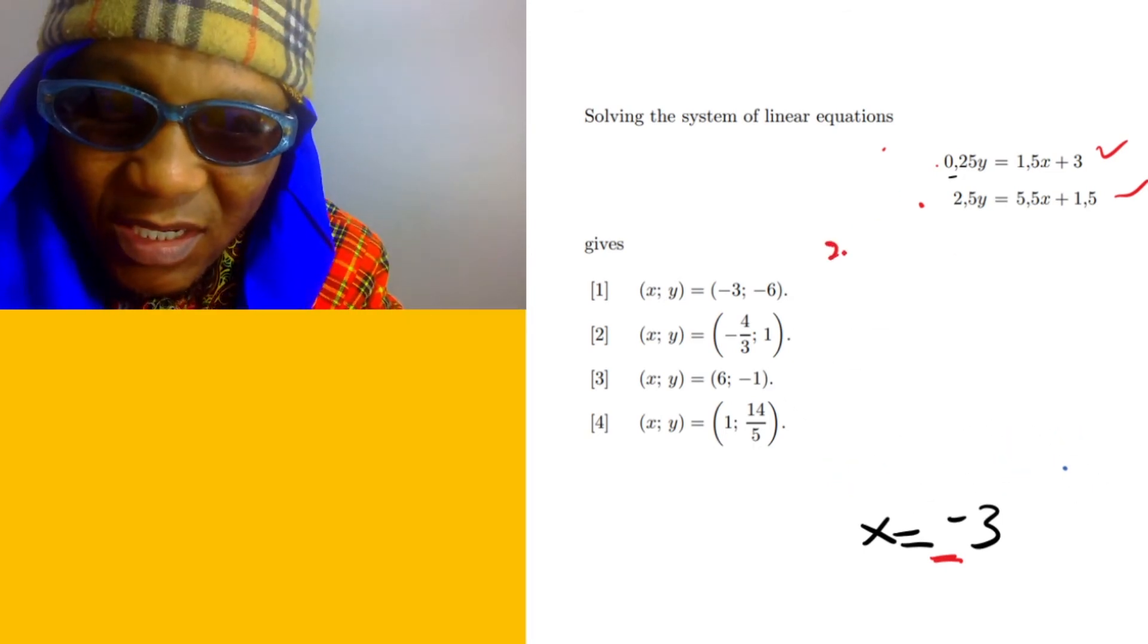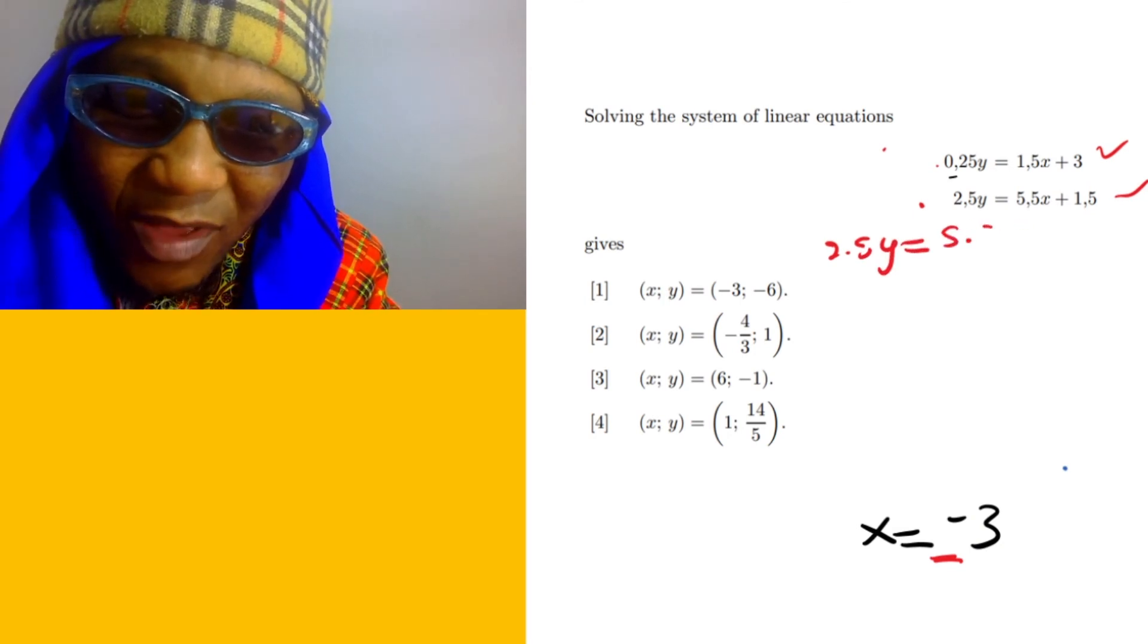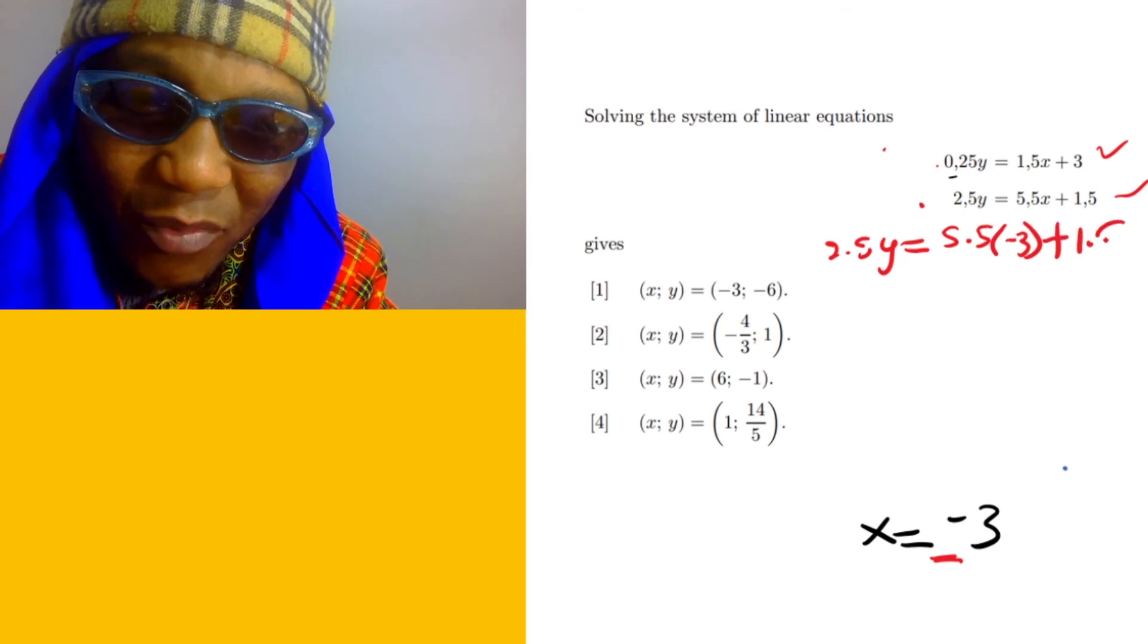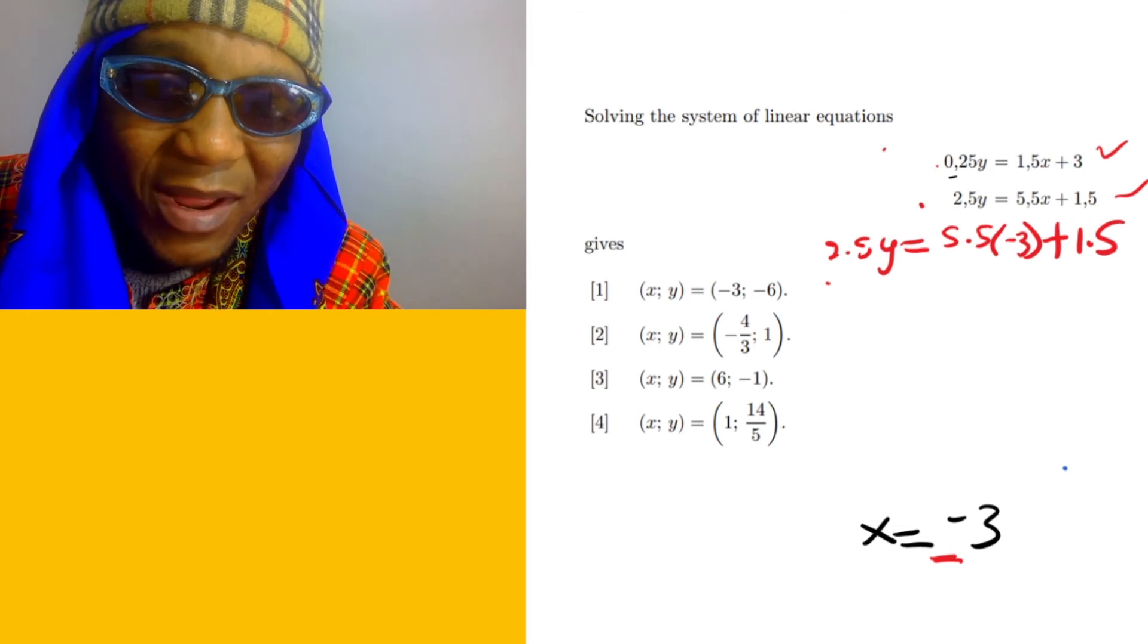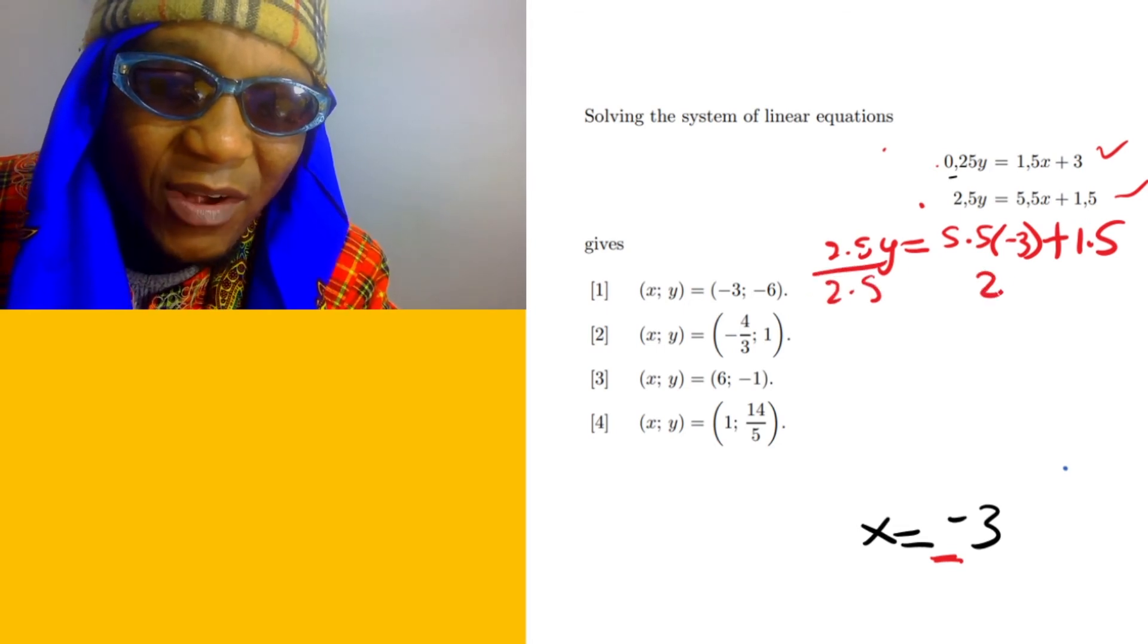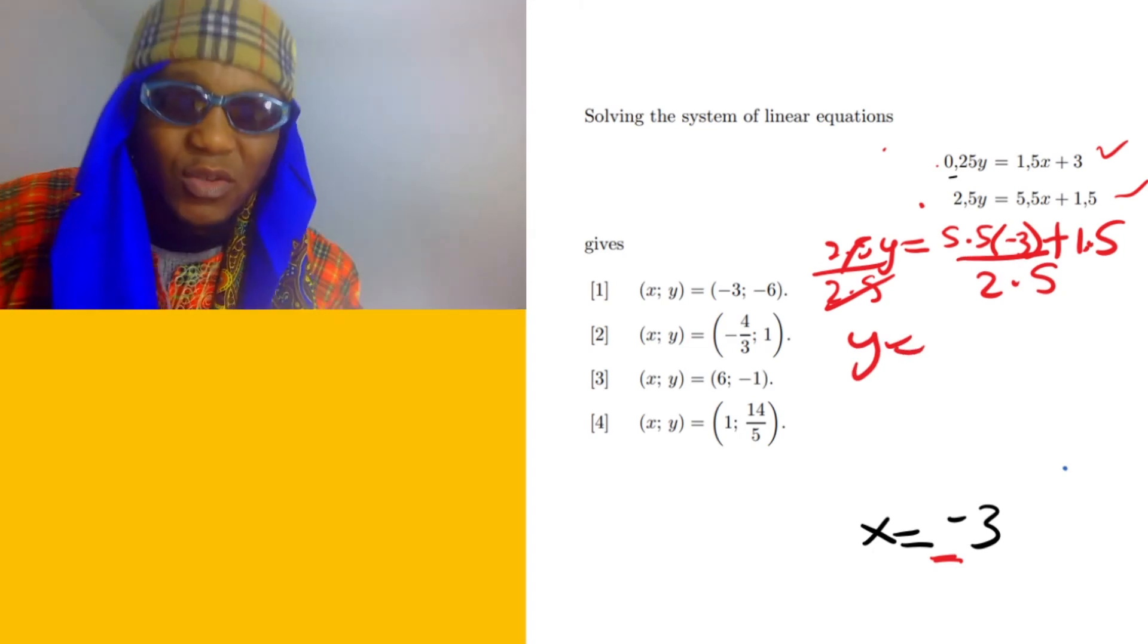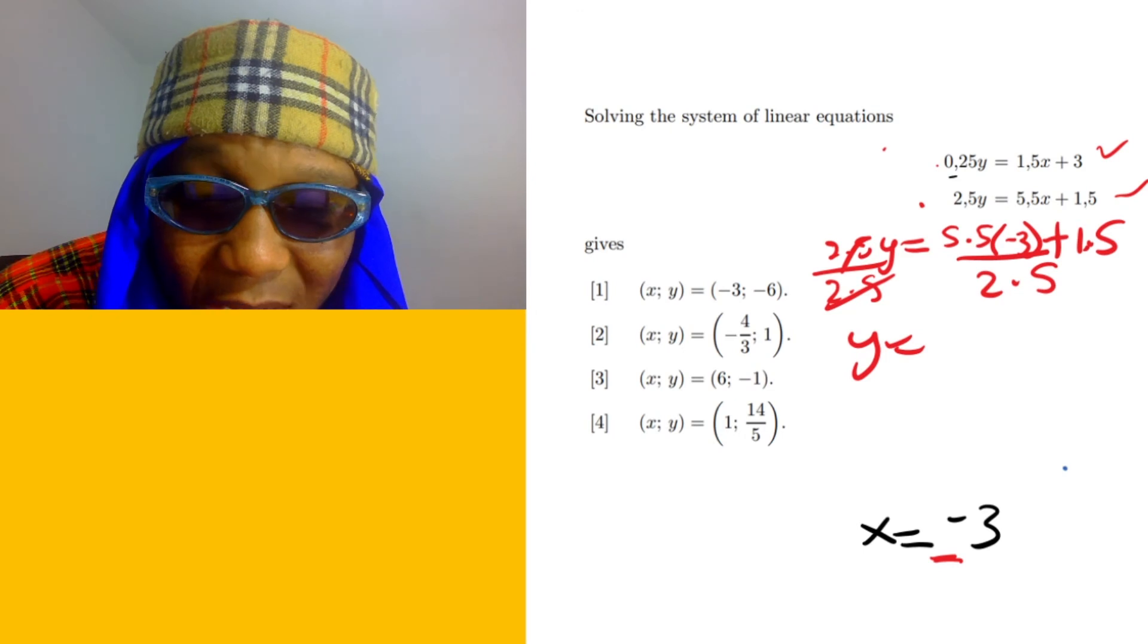I'm gonna say 2.5y equals 5.5 times x, which is negative 3, plus 1.5. We want to get y. How are you gonna get y? I can divide by 2.5 and divide by 2.5. This and this cancel, so y equals... I can simply plug in a calculator and get a final answer.